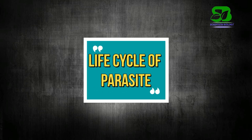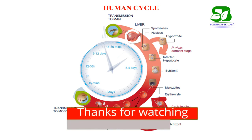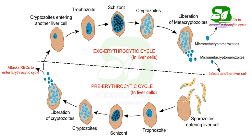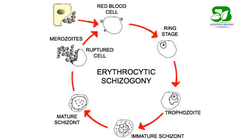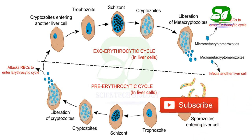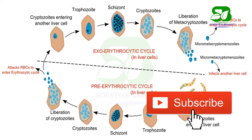Plasmodium requires two hosts to complete its life cycle. The human cycle begins with the liberation of sporozoites in the blood. These sporozoites enter liver cells and change shape to become cryptozoites. These cryptozoites liberate by bursting the liver cells and attack red blood cells. Some cryptozoites, instead of attacking RBCs, reach fresh liver cells and give rise to metacryptozoites. The metacryptozoites attack RBCs again, feed on the cytoplasm, and transform into the trophozoite stage. The mature trophozoite produces 12 to 24 merozoites. Some merozoites change to form micro-gametocytes or macro-gametocytes, which are non-infective for humans.